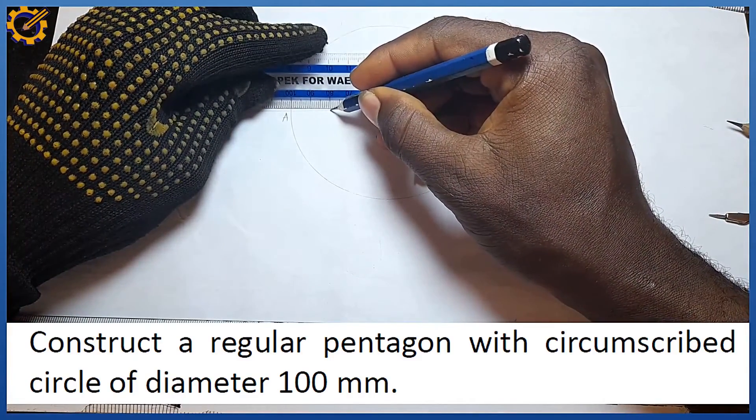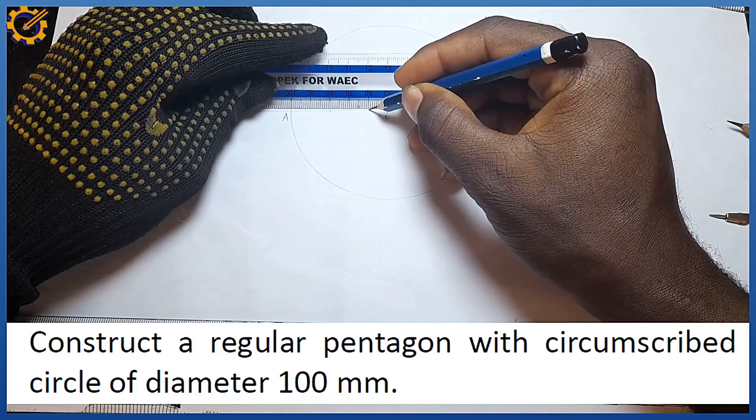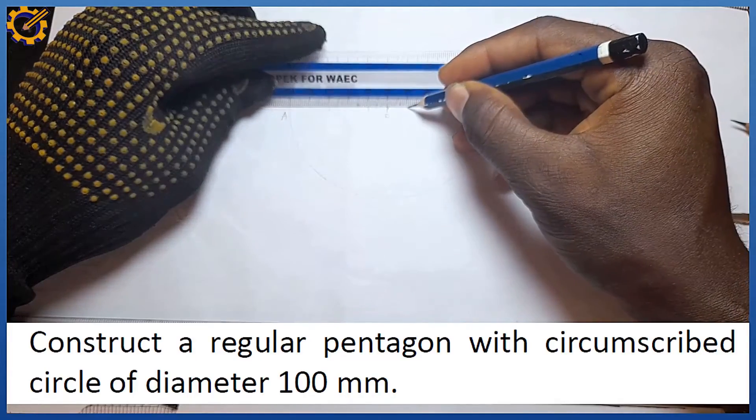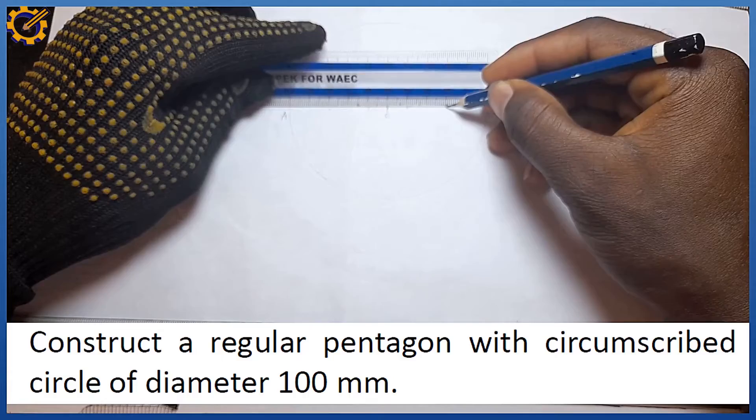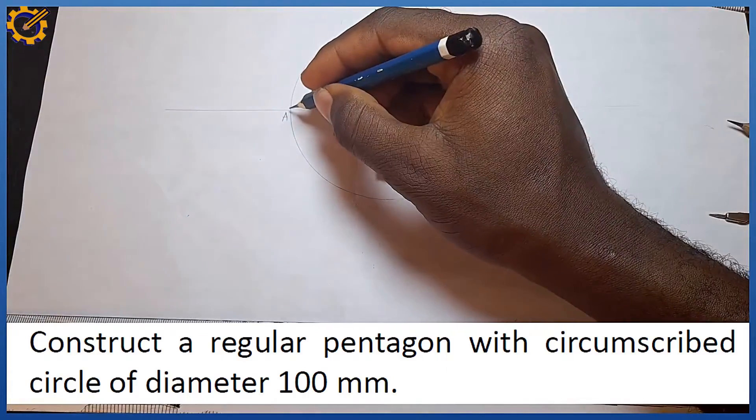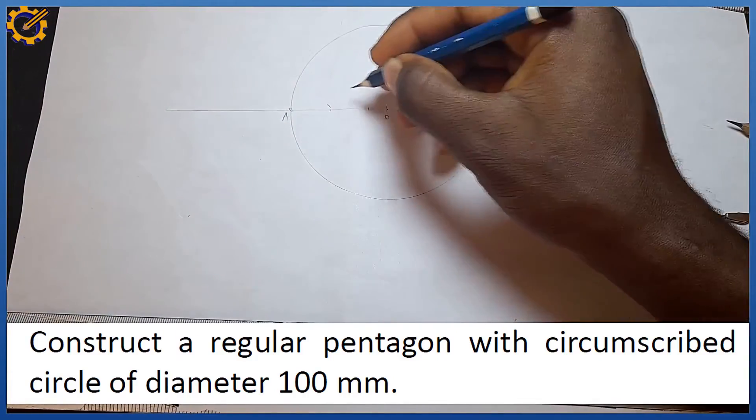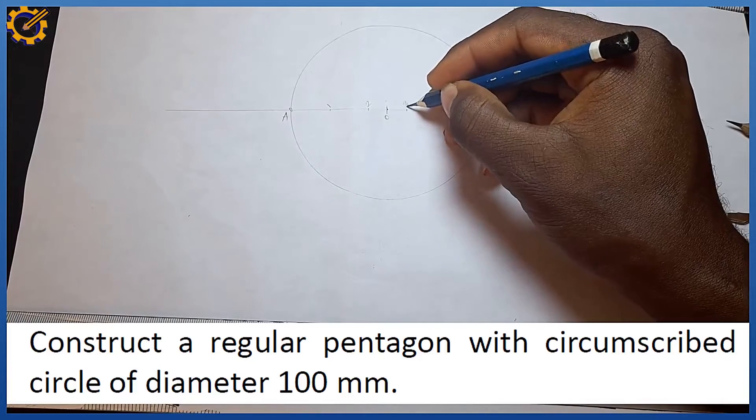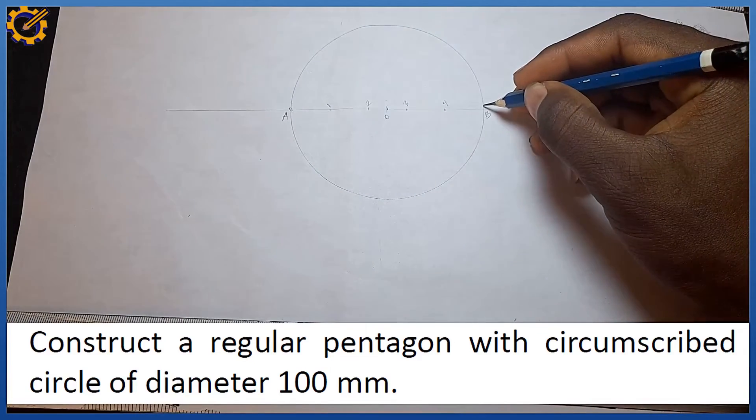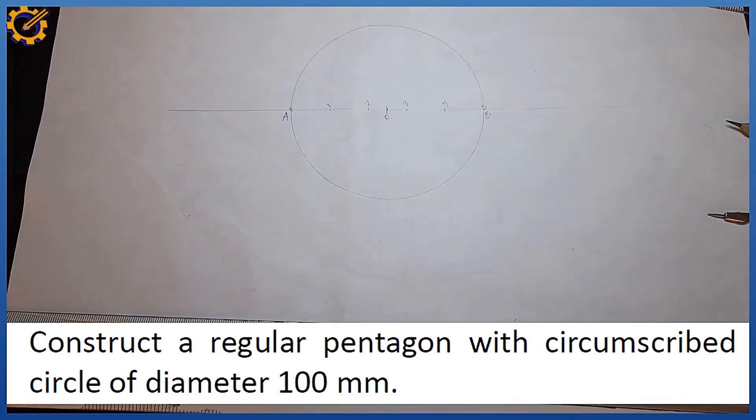So I pick my ruler and step off mark 20 each: zero, one, two, three, four, and five. That is it right there. What is the next procedure now? I'm going to pick distance AB.